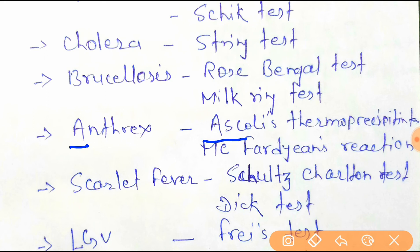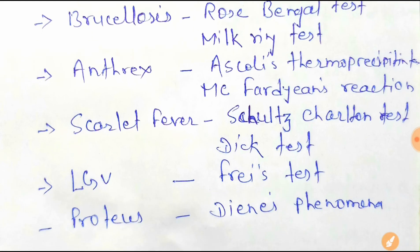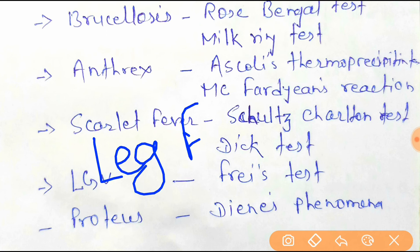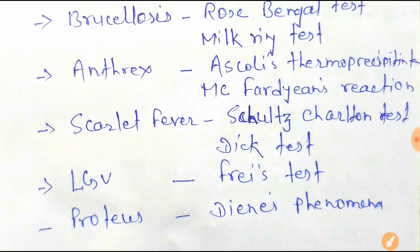Anthrax starts with the letter A — Ascoli's precipitation test, thermoprecipitin test, also starts with A. Scarlet fever starts with 'SC' — Schultz-Charlton, also starts with SC, so you can easily remember. LGV — remember by 'leg fry,' so LGV uses the Frei test.